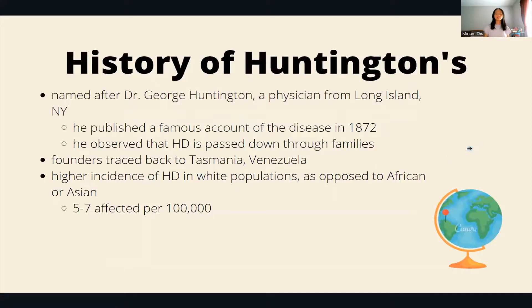Huntington's was named after Dr. George Huntington, who published a famous account of the disease listing all its symptoms. He was also the person who first observed that Huntington's is genetic.